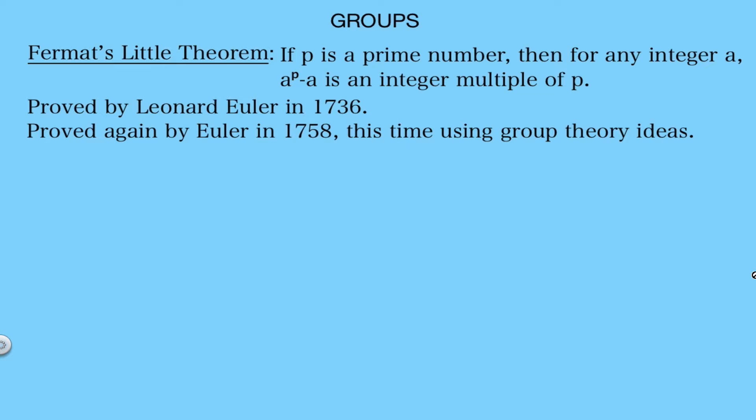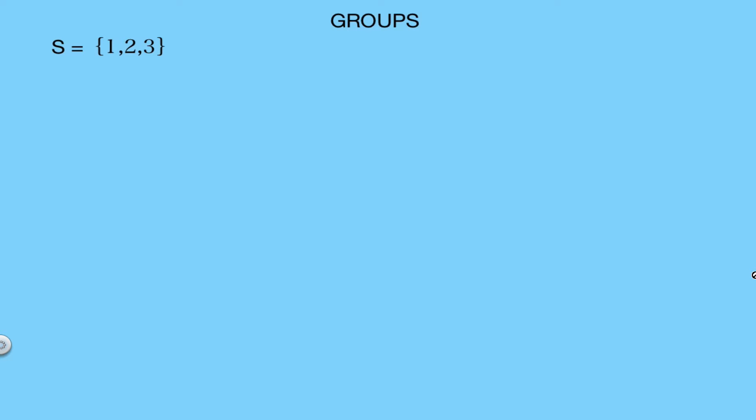Now of course once we know the precise definition of a group, we can intentionally start to look for groups, and it turns out that groups can be applied to many different problems in a variety of fields. For example, we can use groups to look at the different ways we can reflect and rotate different shapes, like equilateral triangles and squares, without really changing them. To do this, let's first look at all the different permutations that can be applied to a set S with elements 1, 2, and 3.